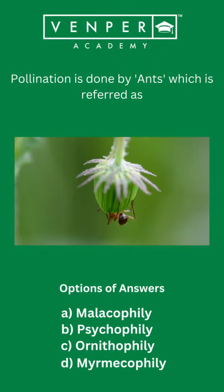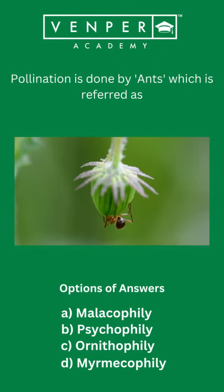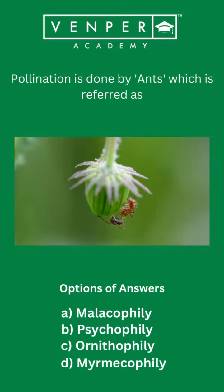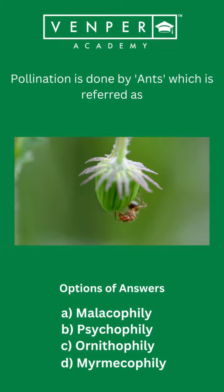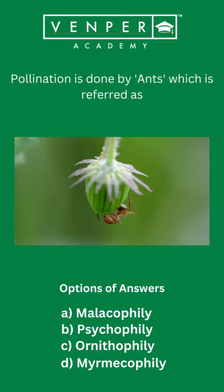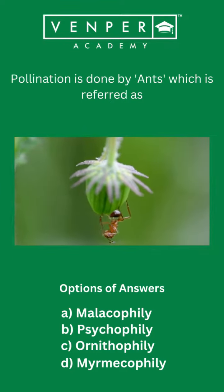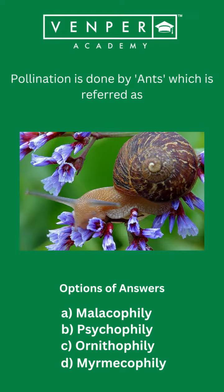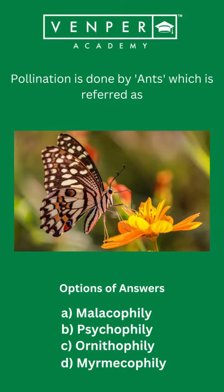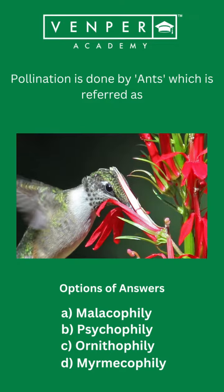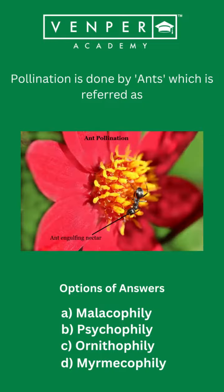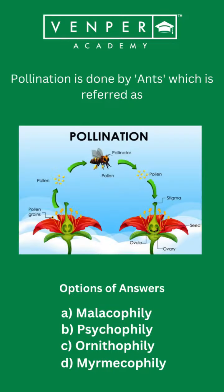The question is: pollination done by ants is referred to as — option A: malacophily, option B: psychophily, option C: ornithophily, option D: myrmecophily.